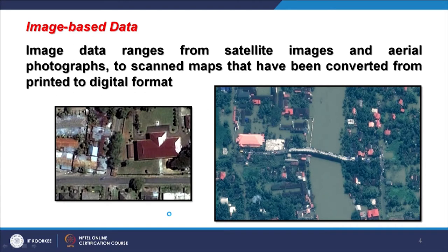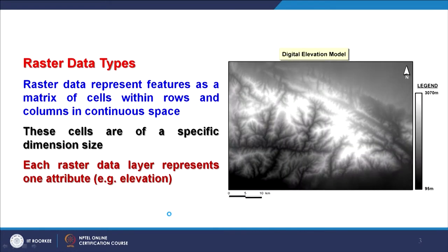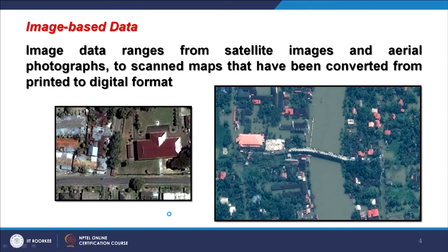Another type of raster data is image data. Two examples are shown here — both have rectangular shapes, though they can also be square. The left one is a colored aerial photograph, and the right one is a very high-resolution satellite image showing fine details. Both images display colors very close to what you see in the real world, because of very narrow spectral bands — making it possible to acquire images in near-true color when not using infrared or other channels.